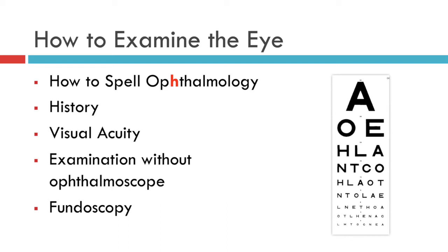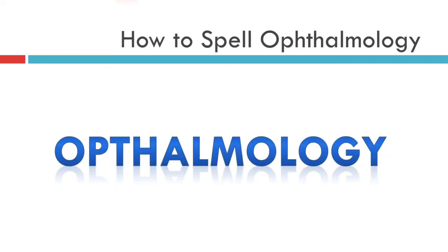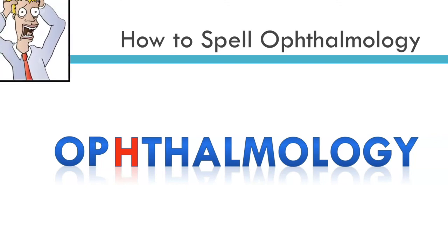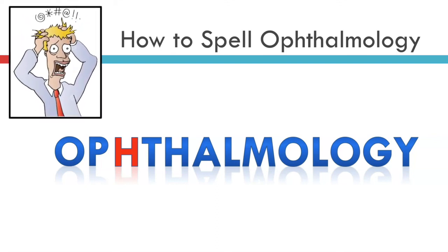Before we start though, as I have already alluded to, it is essential that if you want my help as an ophthalmologist, you must know how to spell ophthalmology correctly. In English, there is always a first H after the P, making two H's in total. If you do not know how to spell my profession, you might find that I am less well disposed to you than I otherwise might be.